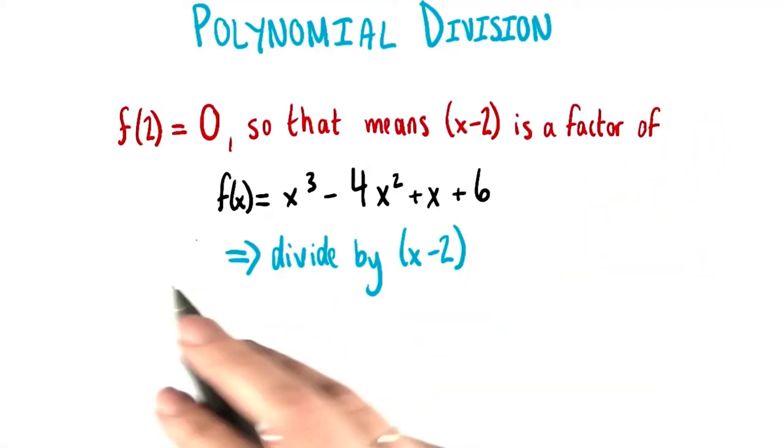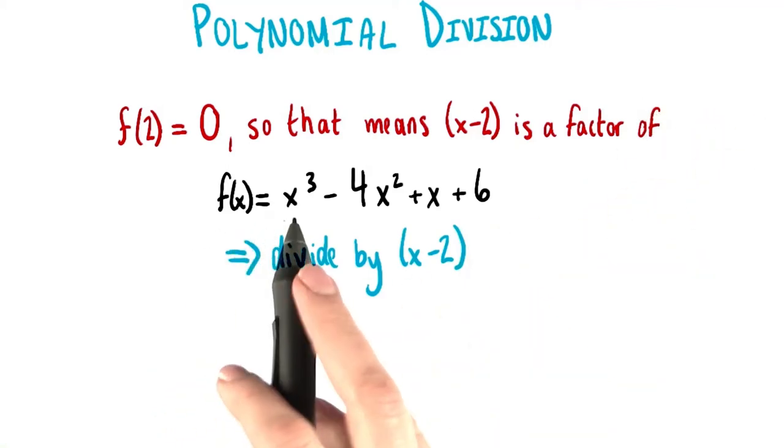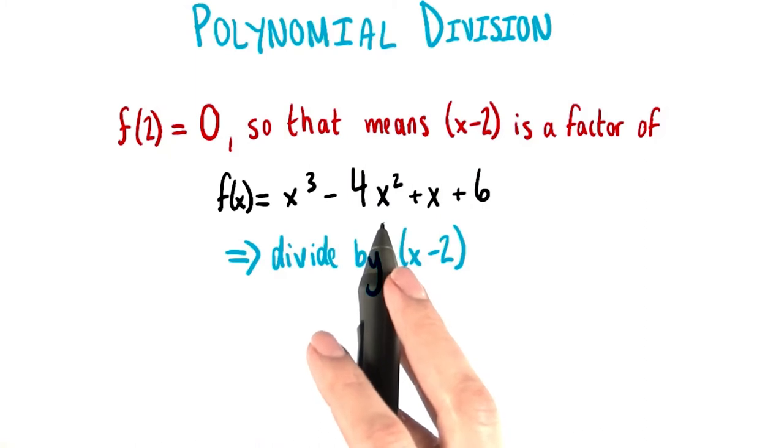In the last lesson, we left off with dealing with this function: f of x equals x cubed minus 4x squared plus x plus 6.